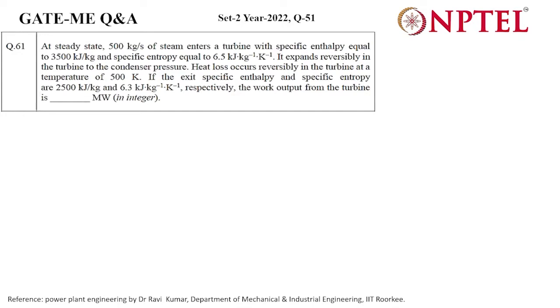This is the question from GATE 2022 Set 2, question 51 in the technical part and 61 in total. At steady state, 500 kilogram per second of steam enters the turbine with a specific enthalpy of 3500 kilojoule per kg at the entry.